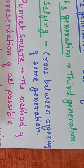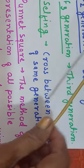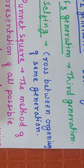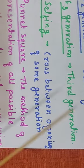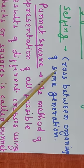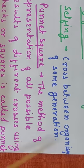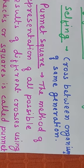Cross between organisms of the same generation is called selfing. When you study crosses, the terms that appear are: cross, filial generation, F1, F2, F3, and selfing. Cross between organisms of the same generation is called selfing.